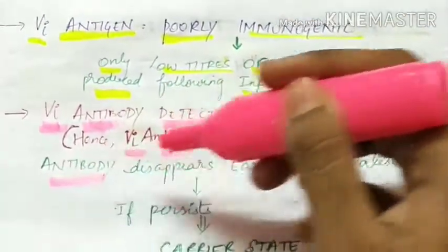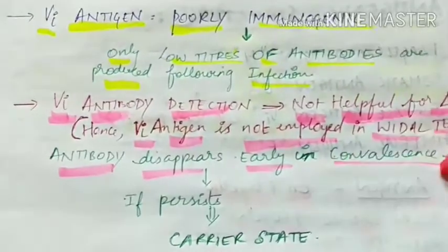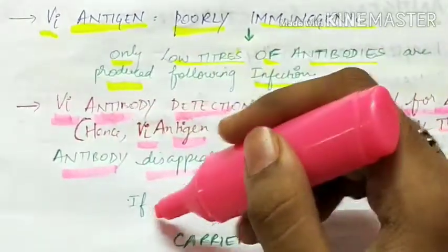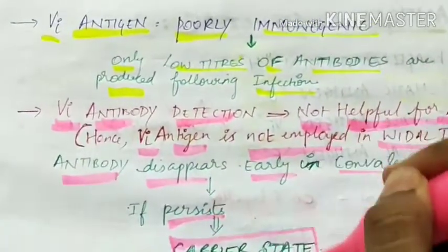The antibody disappears early in convalescence. If the Vi antibody persists, this indicates carrier state.